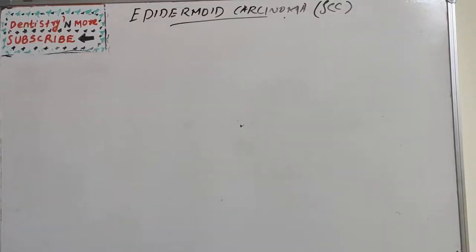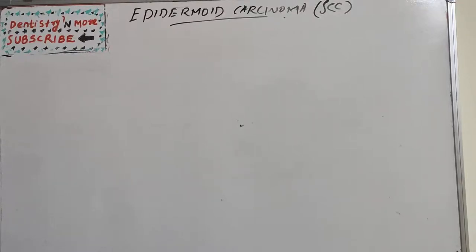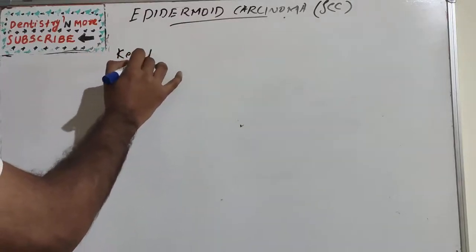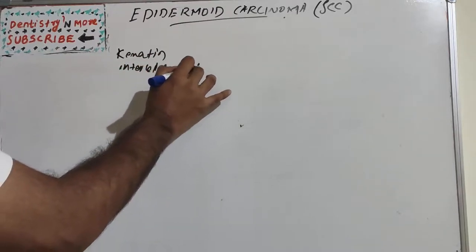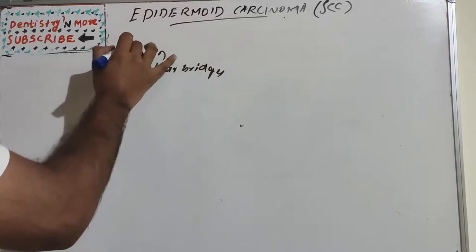Welcome back to another session in Dentistry and More. Today we have epidermoid carcinoma, also known as squamous cell carcinoma or SCC, which is the most common malignant neoplasm of the oral cavity. It is a neoplasm which exhibits squamous differentiation, characterized by the formation of keratin and the presence of intercellular bridges.